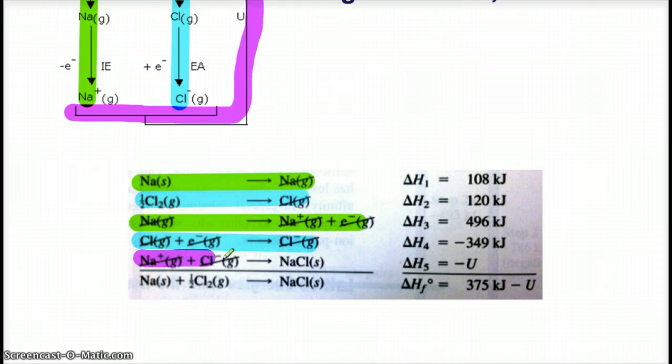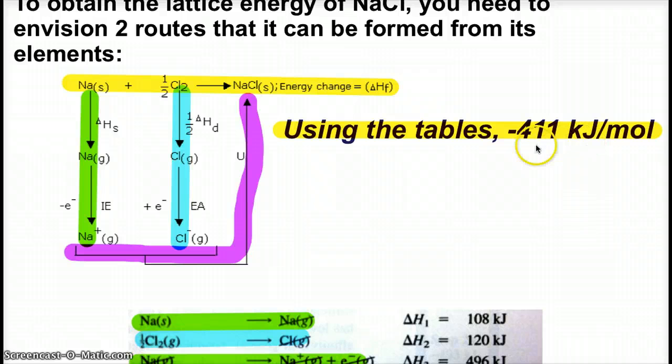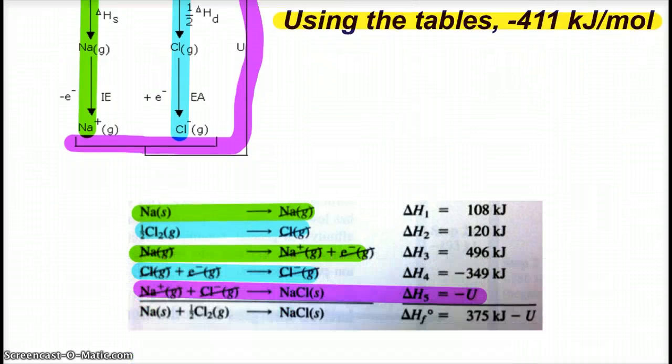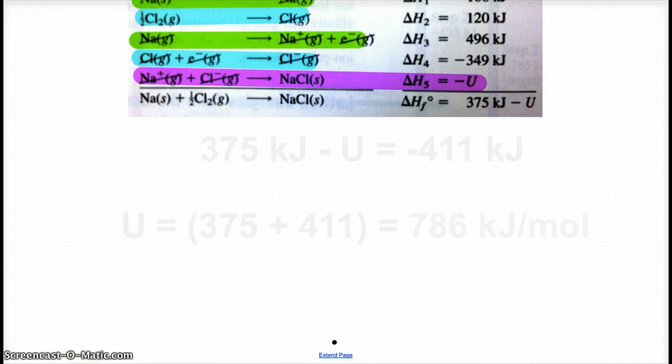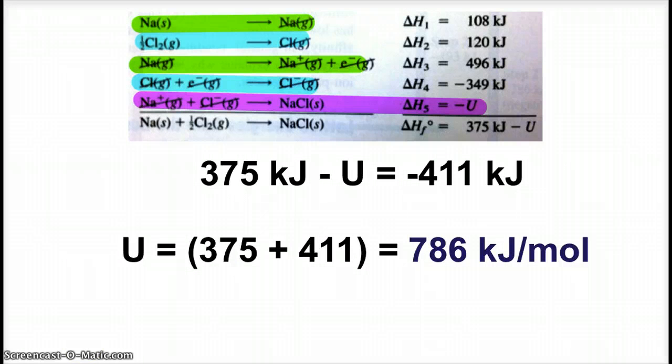And then we put those ions together. And this putting of the ions together is the lattice energy. And so, by adding up all the delta H's, 375 kilojoules minus U, now we can figure out, because we know from the tables, it's negative 411 kilojoules per mole. And so, we see by adding up all those delta H's, 375 minus U equals the negative 411. And there we get the lattice energy, 786 kilojoules per mole.